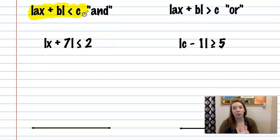But it's really the most important part when you start these problems. If you have a less than after your absolute value is isolated, then it's an and problem. If you have a greater than, then it's an or problem.